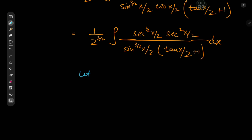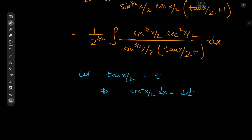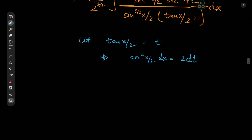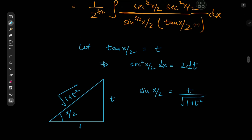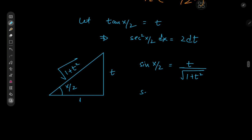Now for a nice substitution: let t = tan(x/2), which implies (1/2)·sec²(x/2) dx = dt, in other words the sec²(x/2) dx becomes 2 dt — a very convenient differential element. For the secant and sine terms, I'll construct a right triangle with acute angle x/2, opposite side t, adjacent side 1, so hypotenuse = √(1 + t²). Therefore sin(x/2) = t/√(1 + t²) and sec(x/2) = √(1 + t²).